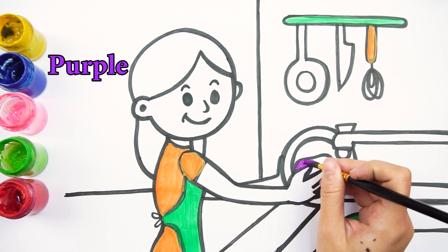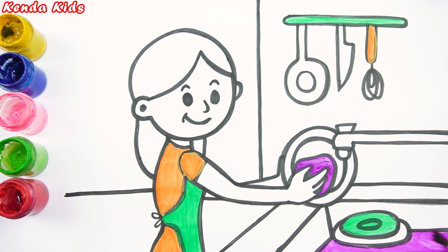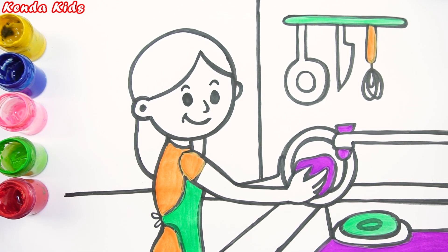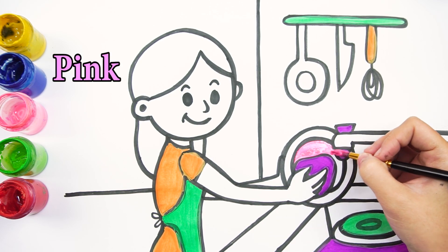About the washcloth and the part under the sink, I will use purple. I will color the dish wiping.